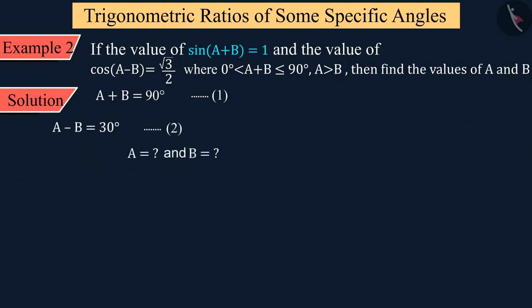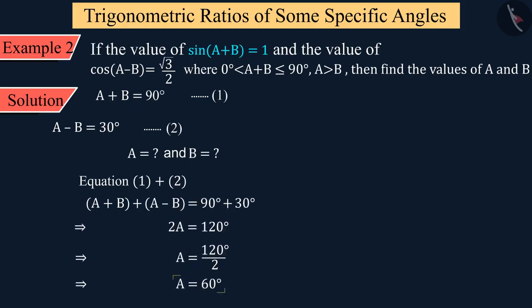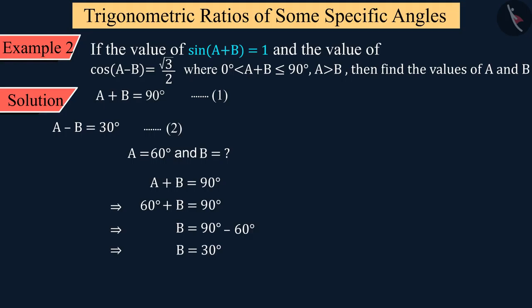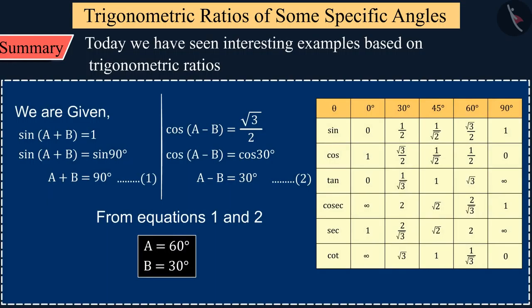Since we have to find the values of A and B, we add equations 1 and 2. On solving, the value of A is obtained as 60°. By putting the value of A into equation 1 or equation 2, we get the value of B as 30°. So hopefully you should have understood how to use trigonometric ratios for specific angles.